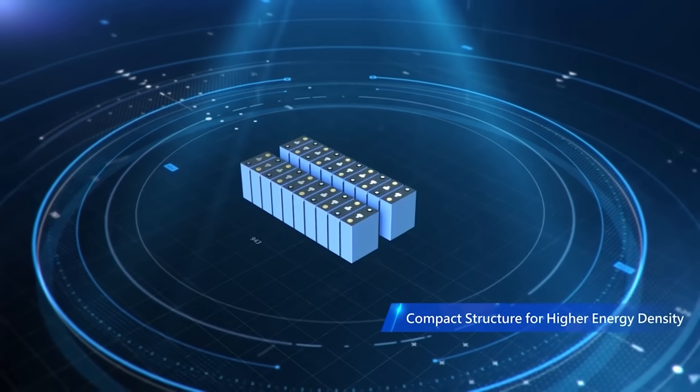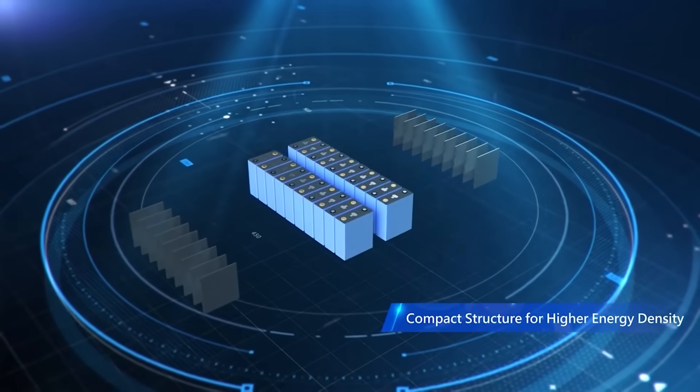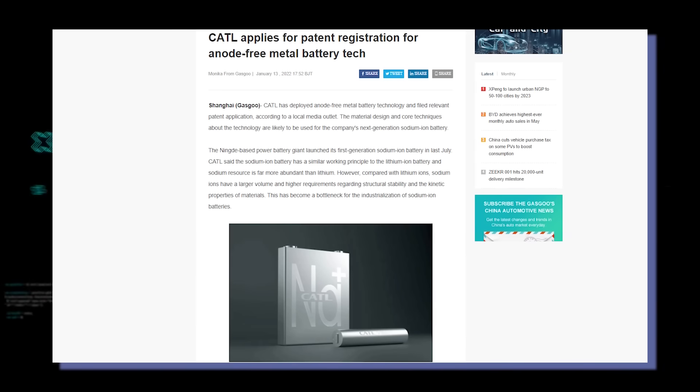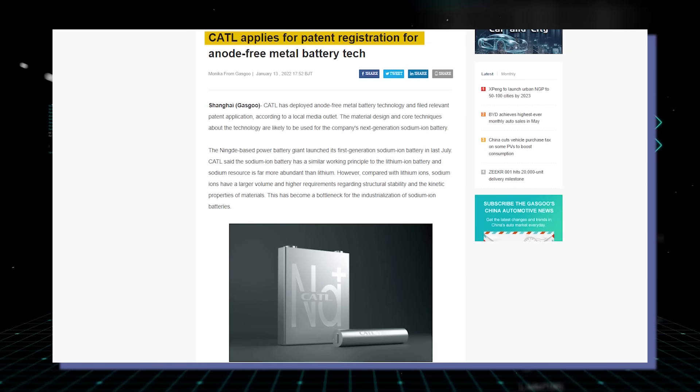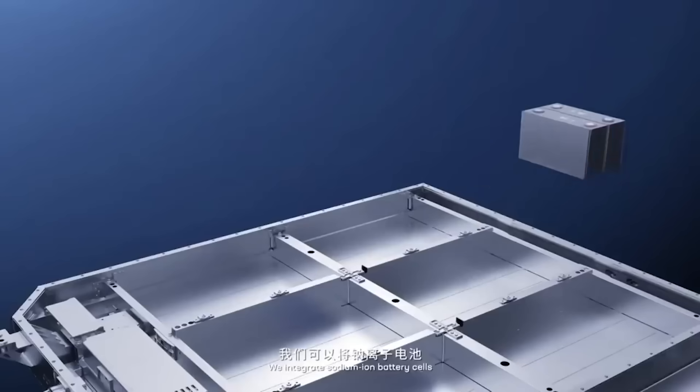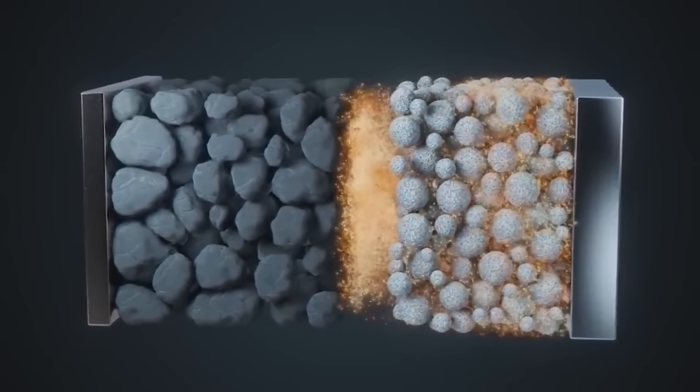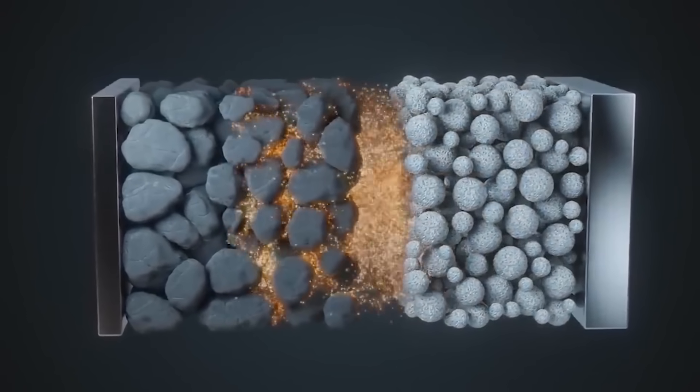For the next generation of sodium ion batteries, CATL is working on an anode-free metal battery technology. The company filed a patent named Na Metal Battery Electrochemical Device, in which the metal layer formed on the negative current collector after the first charging is completed is used in place of the negative electrode.